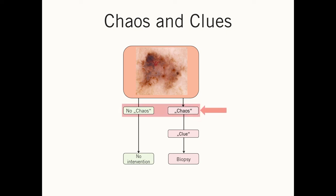The algorithm has two steps. The first one is you look for chaos. If you don't see it, you can leave the lesion. Only if you see that the lesion is chaotic, you look for certain morphologic clues, and if they are present, you biopsy the lesion. I will go through the two steps in the next minutes.